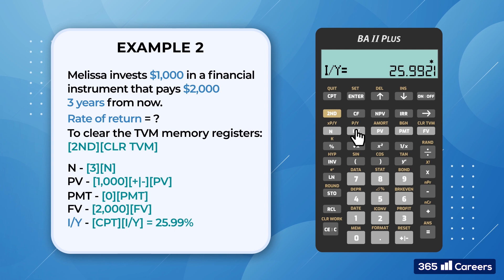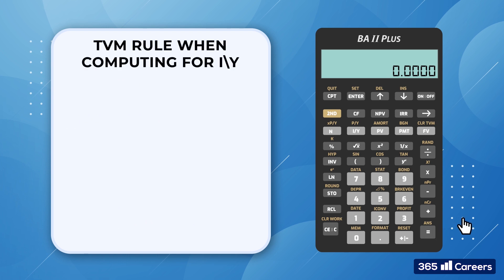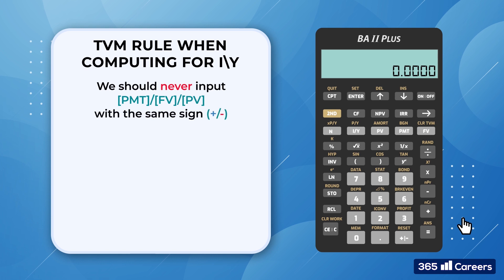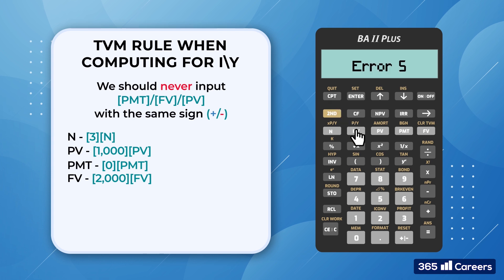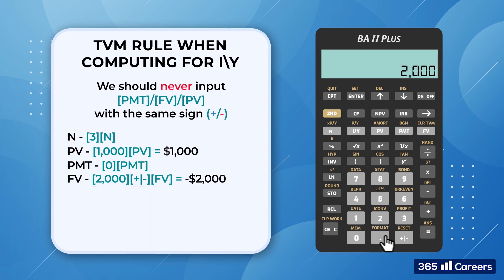Before we move on, let's focus on a trap we should avoid when calculating the interest rate per period. We should never input the annuity payment, future, and present values with the same sign. If we accidentally do that, we'll get error message number 5, which means we messed up the signs of PMT, PV, and FV. Even if we switch the signs of the present and future value, we will still end up with the right answer. But if we add them with the same sign, we wouldn't be able to obtain a result. This is a very important rule, so make sure that you remember it when solving TVM problems.